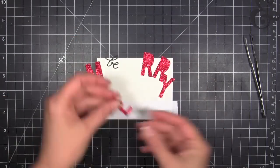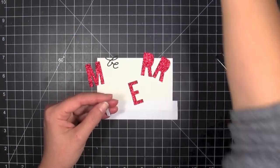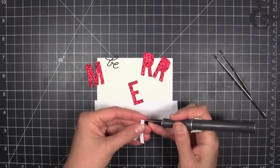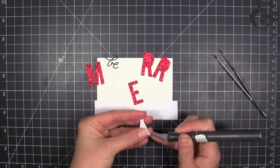To line them up, I'm taking a piece of Post-it tape and creating a visual line there. You can use a pencil line if you want to.